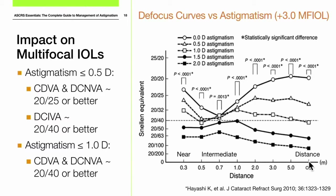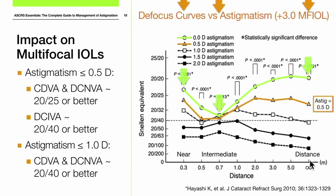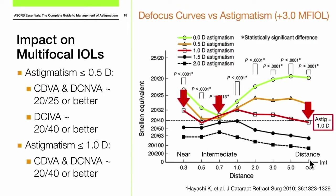What's the impact on multifocal IOLs? With no astigmatism, the defocus curve shows a peak at near and at distance. Adding half a diopter of astigmatism decreases visual acuities — the profile of the defocus curve is maintained, but with less distinction between near, intermediate, and distance. At a diopter, the curves start to flatten out; we can still maintain 20/40 across all distances, but with less benefit at near and distance. Below that, we lose the multifocal effect entirely.